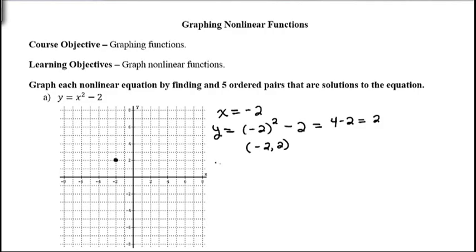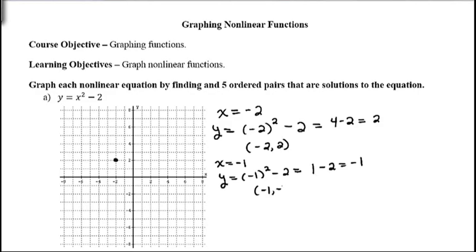For x equals negative 1: y equals negative 1 squared minus 2. Negative 1 times negative 1 is positive 1, minus 2 gives negative 1. So that's the point (−1, −1), which goes right here on the graph.